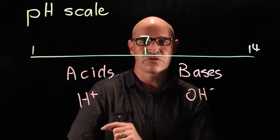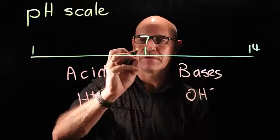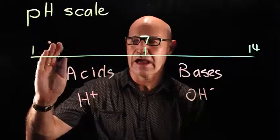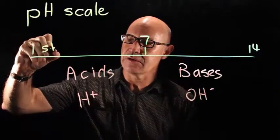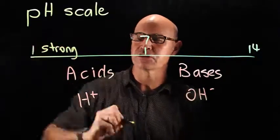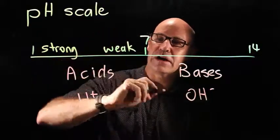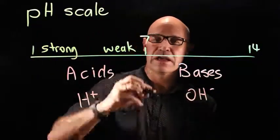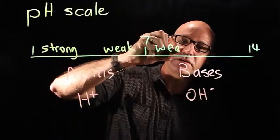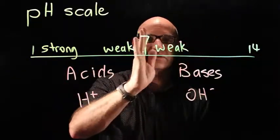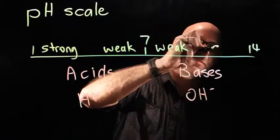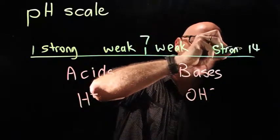We're able to measure the strength of an acid or a base. Strong acids have a lower pH, and weak acids have a higher pH closer to 7. It's the same with bases: weak bases are just above 7, and strong bases are closer to 14.